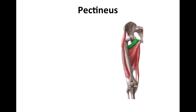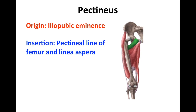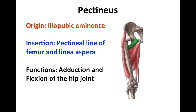We're going to discuss pectineus first. The point of origin is the iliopubic eminence. It inserts at the pectineal line of the femur and linea aspera, and its function is adduction and flexion of the hip joint.